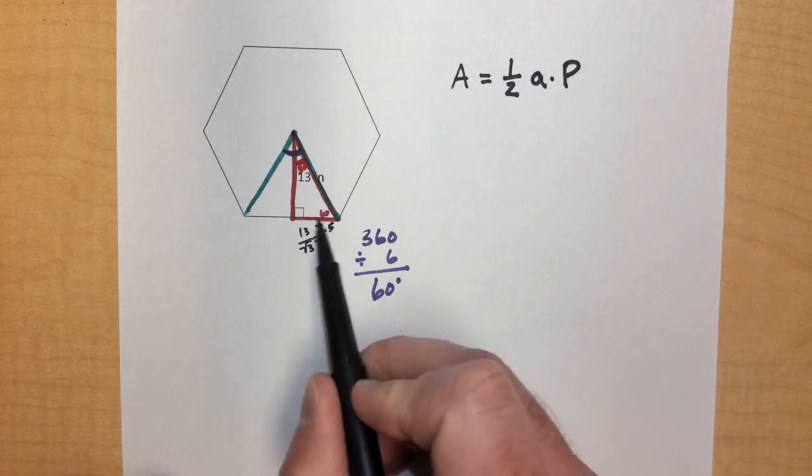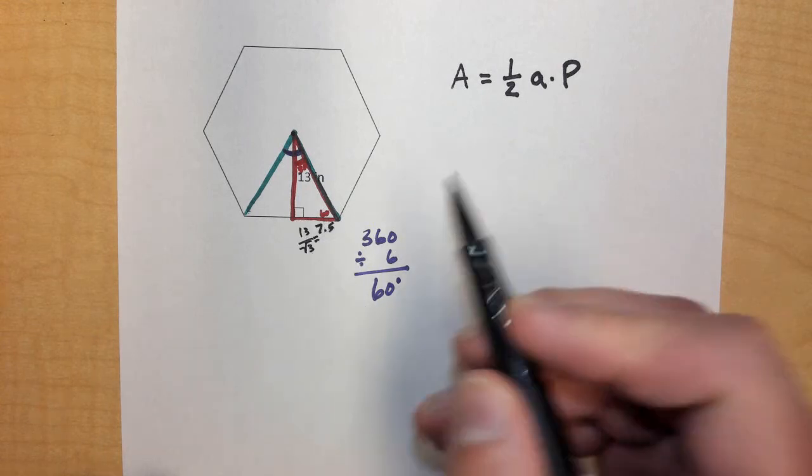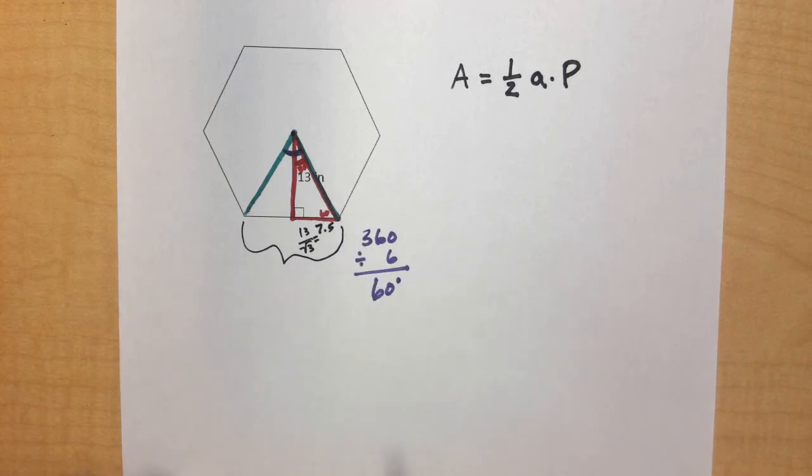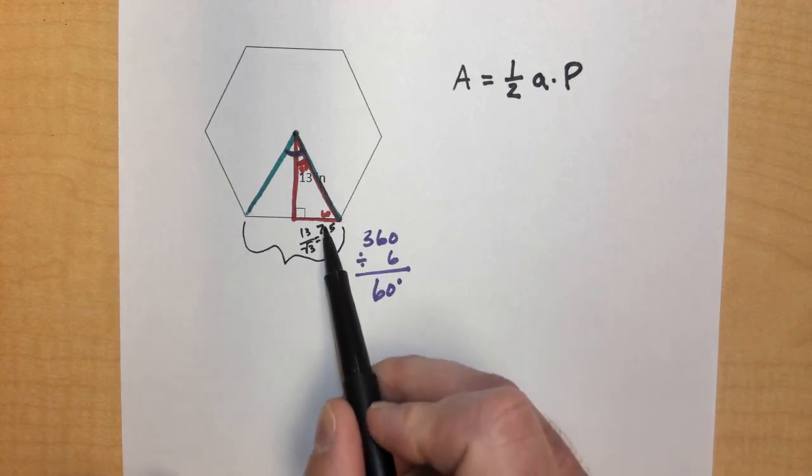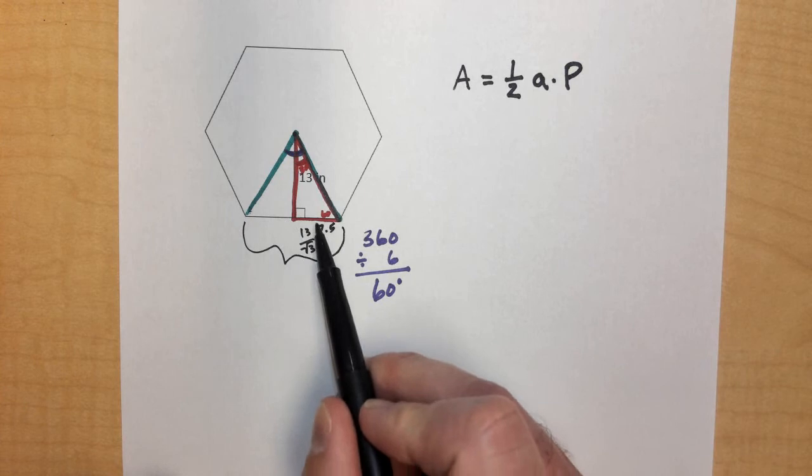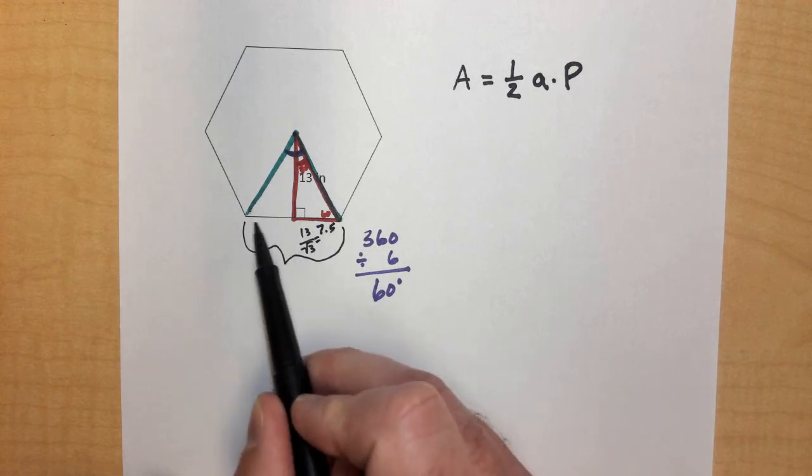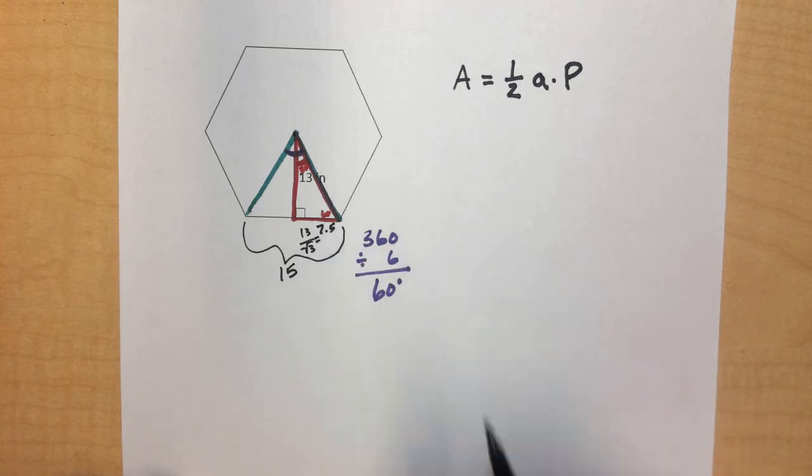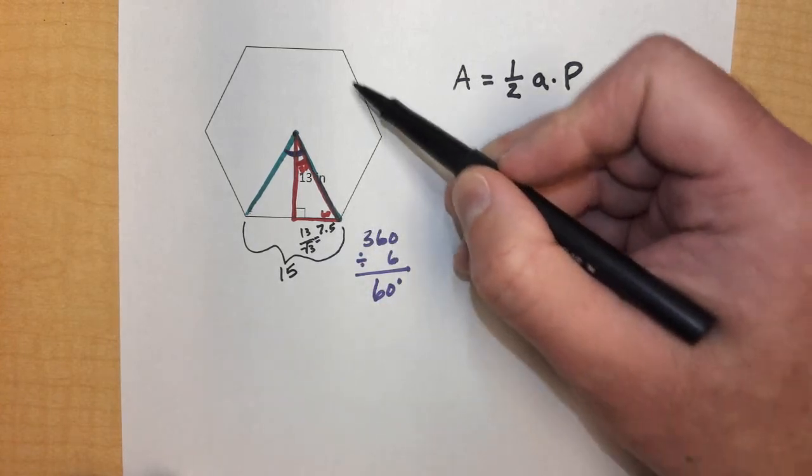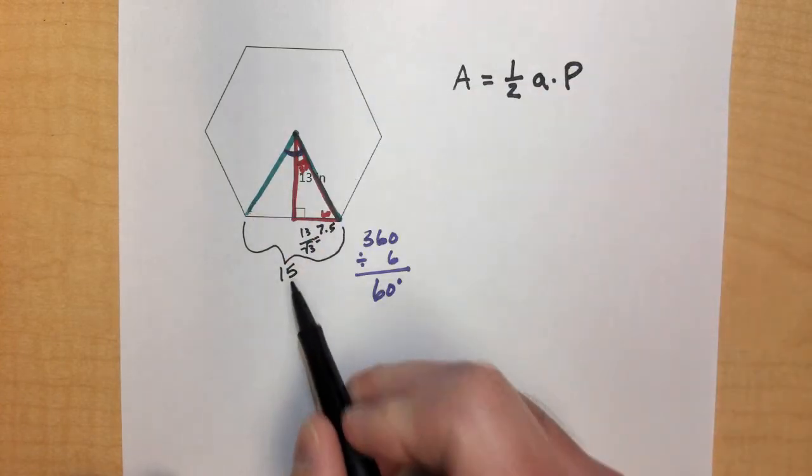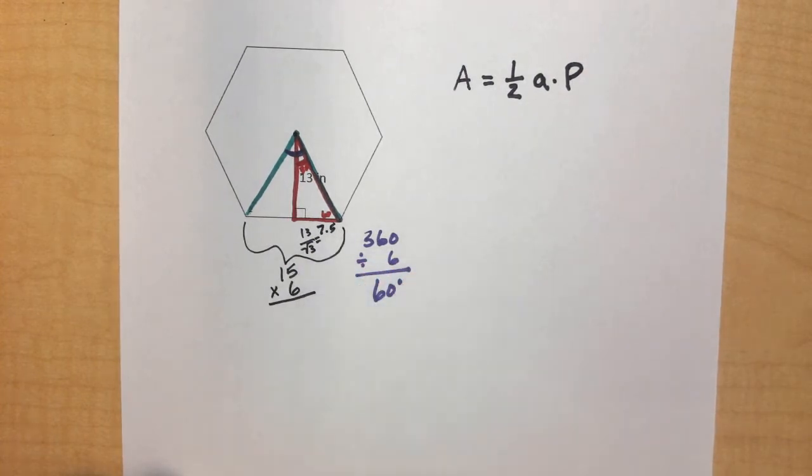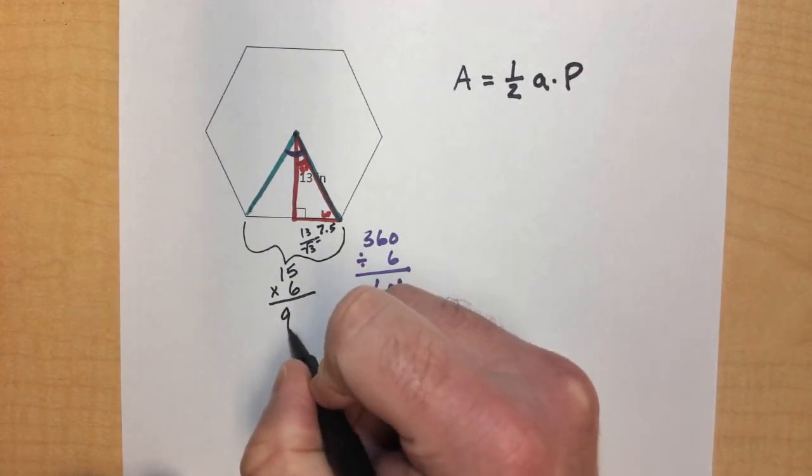Knowing that this length is 7.5, now I know that the complete side length of the hexagon is 7.5 times 2. Since I have 7.5 here, 7.5 here, I know that this complete side length is going to be 15. And since there are 6 congruent sides, taking that 15 and multiplying by the 6 sides gives me the perimeter of 90.